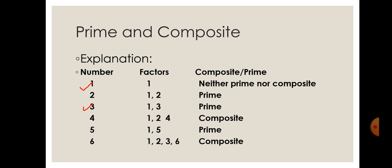If you look at the first number, which is one, we know that one has only one factor — one divides itself. According to the definition, it does not fall in the definition of prime or composite. So one is neither a prime nor a composite number.